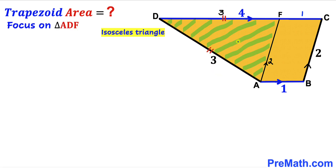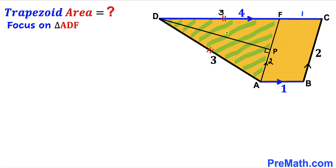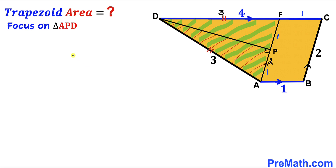We can see that side DF equals side AD — both are 3 units each. Let's focus on triangle ADF: this is an isosceles triangle since these two side lengths are equal. I have dropped perpendicular DP onto side AF, which bisects AF into two equal parts. Since AF is 2 units, segment FP equals 1 unit and segment AP equals 1 unit as well.